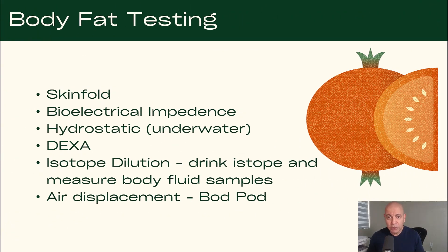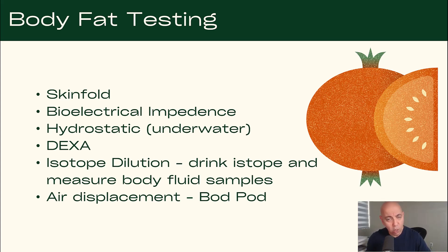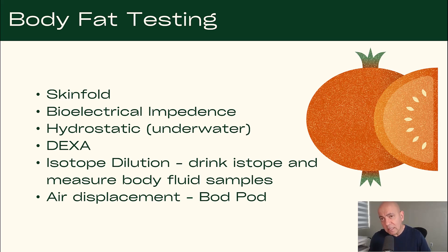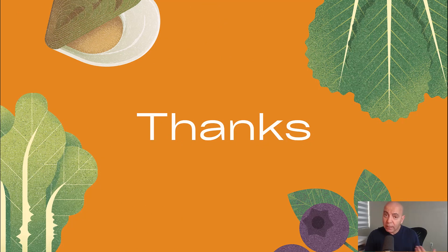If you want fancier options, there are scales that use bioelectrical impedance — they shoot a very mild electrical current and you don't feel it at all. These are now $25 to $30 and available at Amazon, Walmart, anywhere. More advanced methods include hydrostatic weighing where they dunk you in a tank, DEXA scans, isotope dilution, and bod pods — all of which provide more specific and sensitive types of body fat testing.